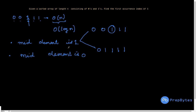When my mid element is one, I check if mid minus one is zero — that means this is the first occurrence of one. So whenever I get a one, I check if the previous element is zero. If so, this is my answer and I return mid. Otherwise, all elements after this point are also one, meaning the first index of one lies somewhere in the left half, so I apply binary search to that half.